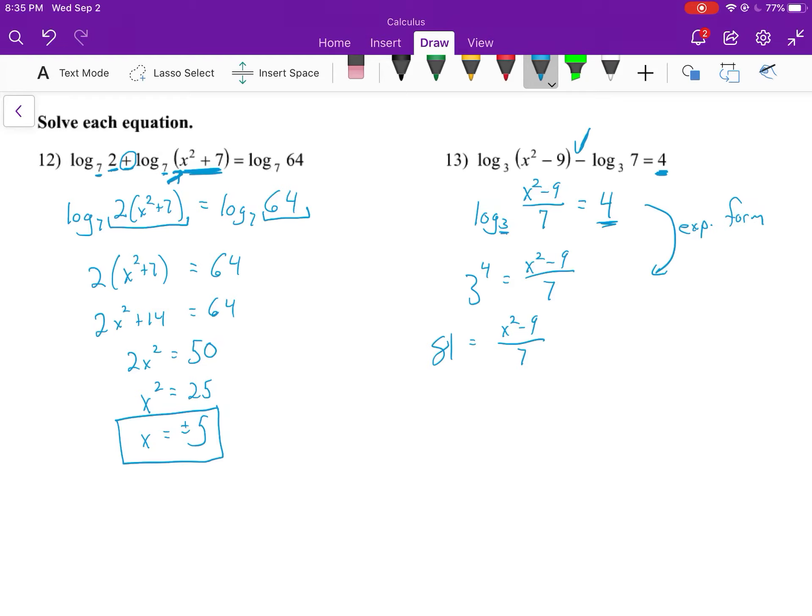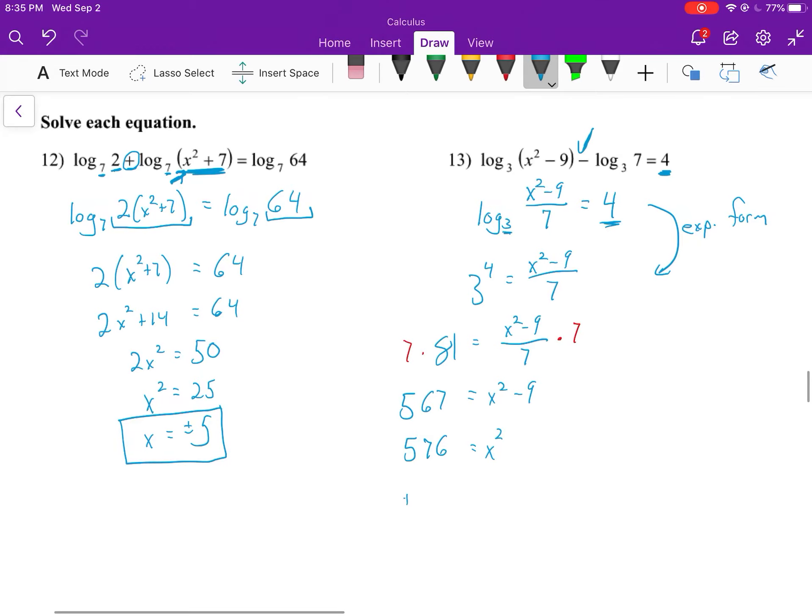To get rid of that 7, multiply both sides by 7, which gives us 567 = x² - 9. Add 9 to both sides to get 576 = x². Taking the square root - I believe that's 24 - so we get x = ±24.